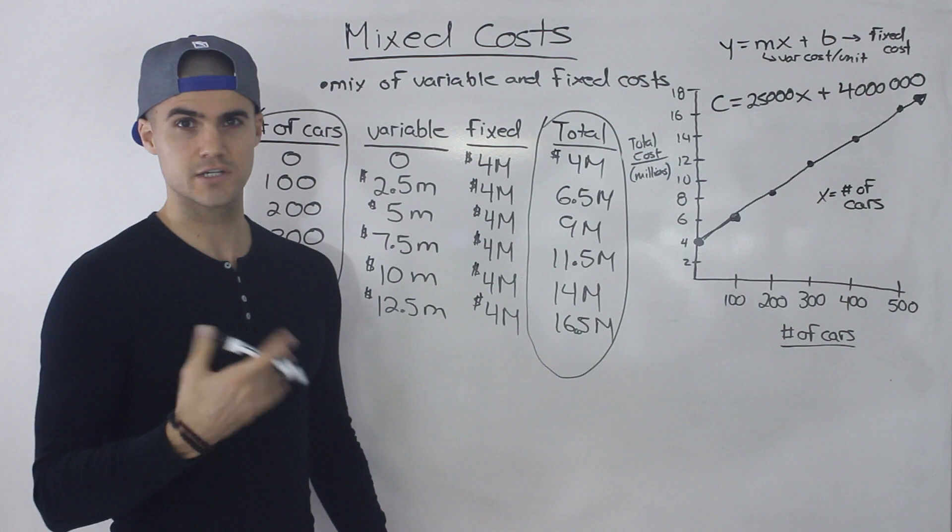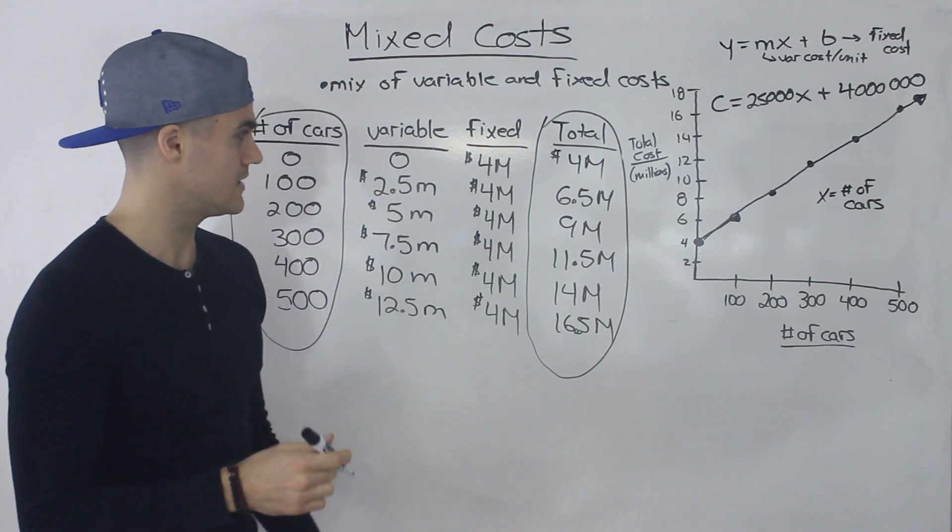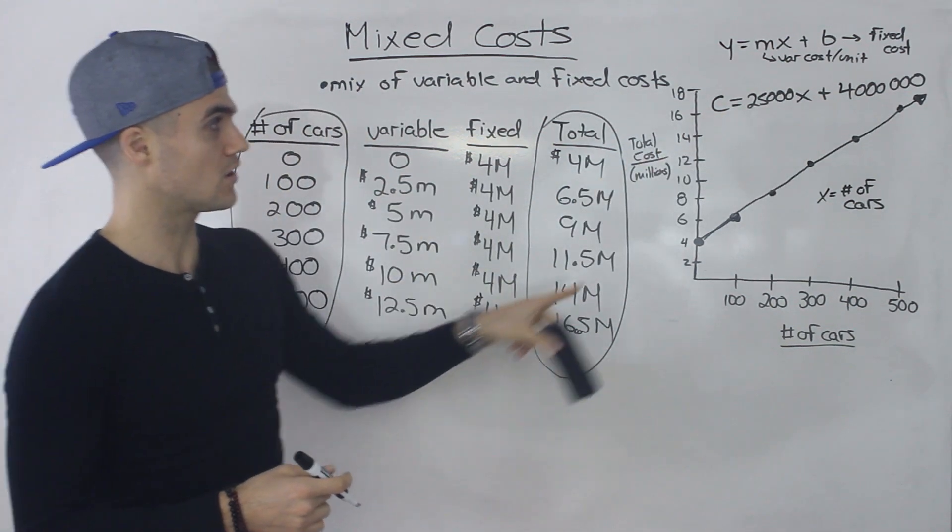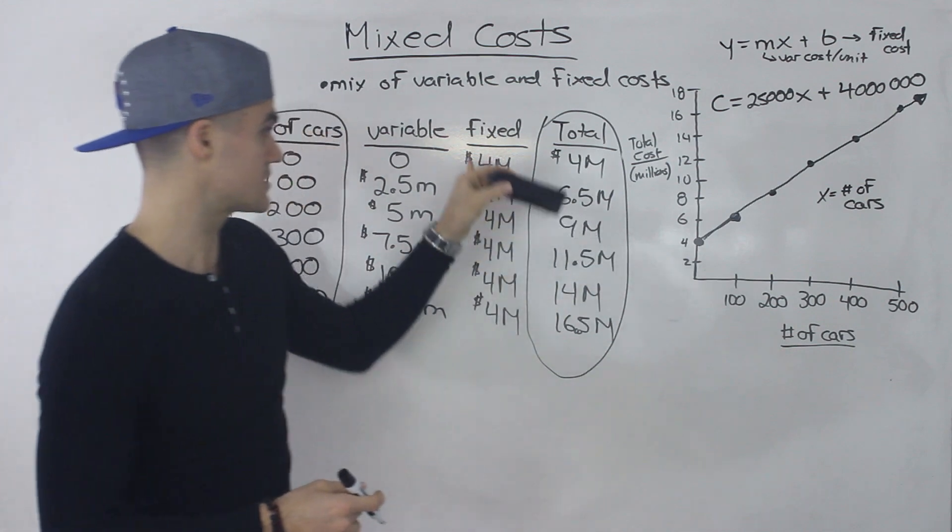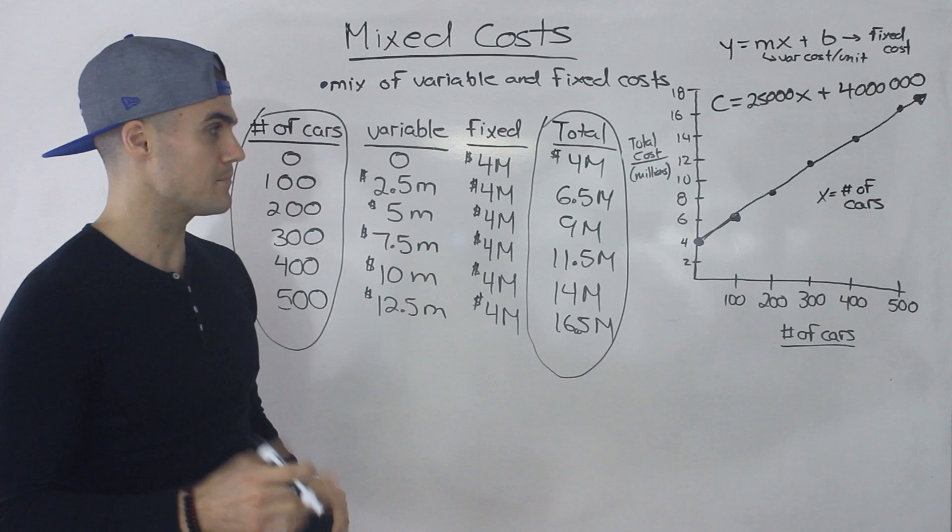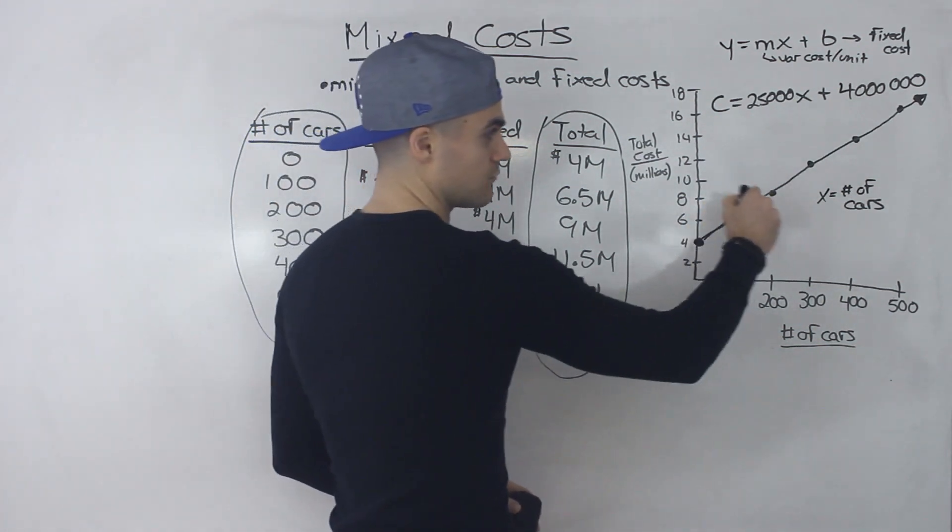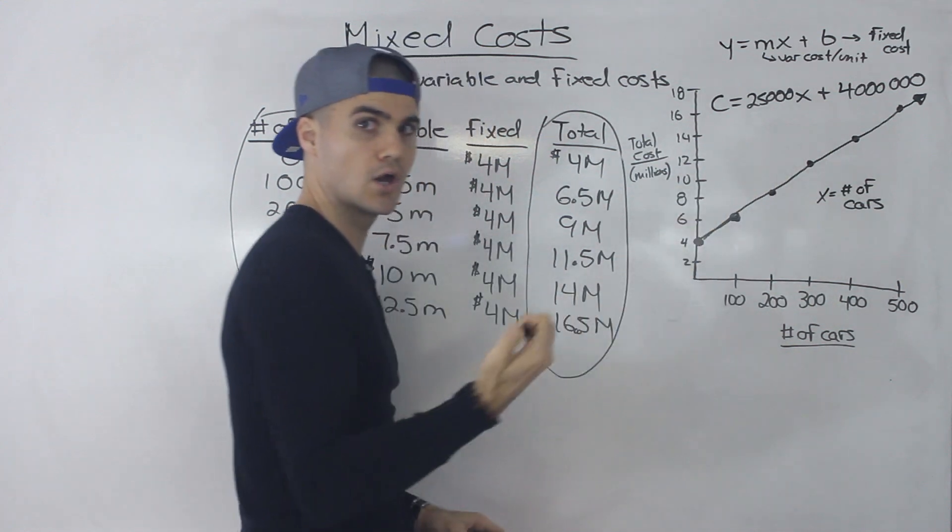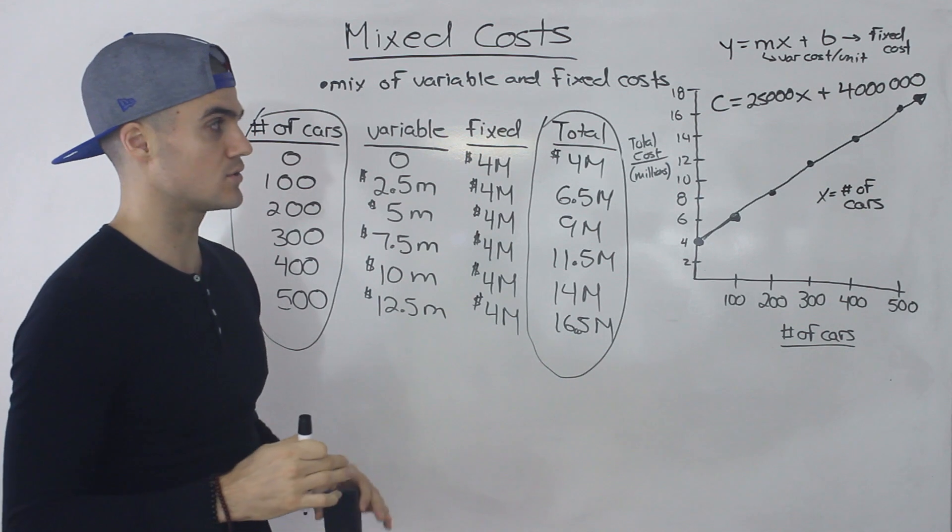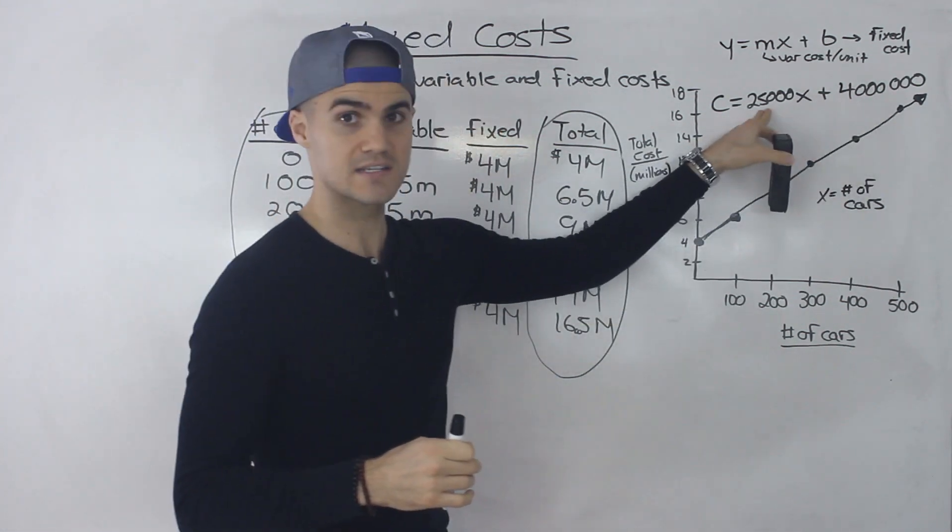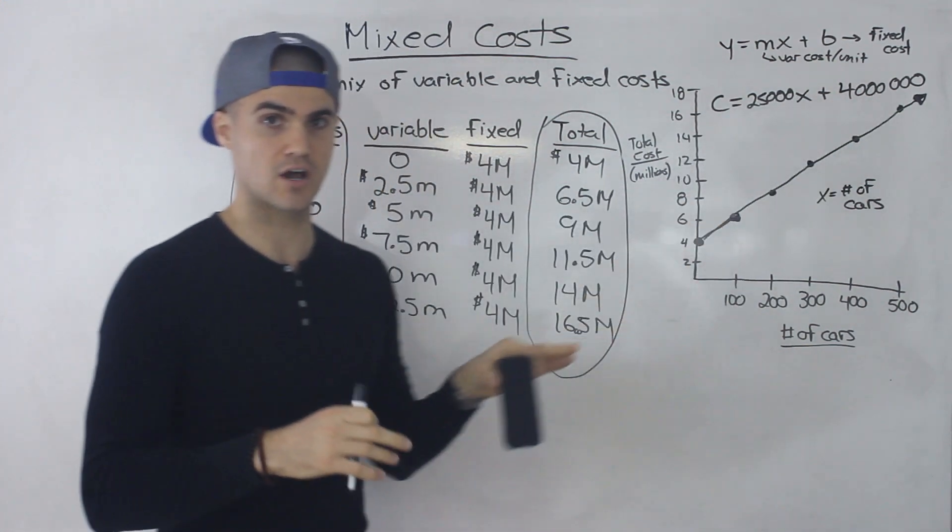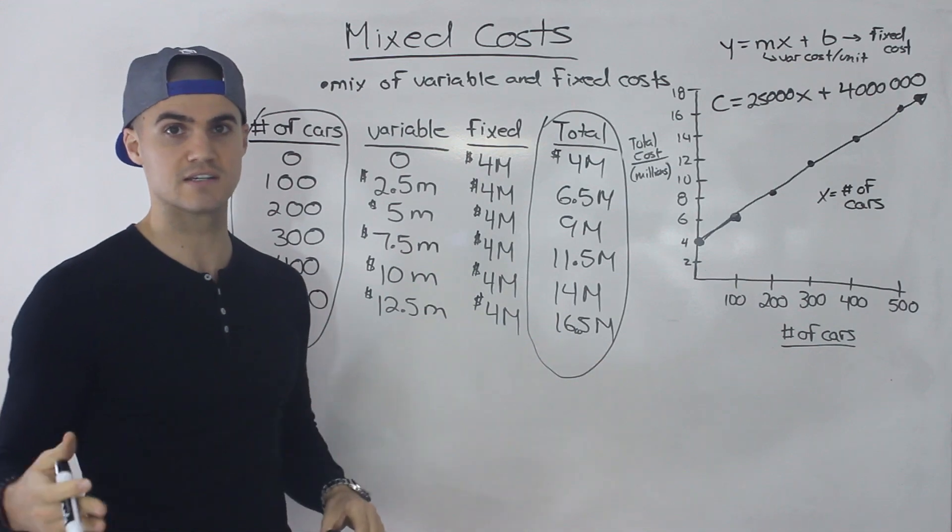Now this example that we just did, it's actually not too bad. It's pretty easy because we were given what that variable cost per unit is already. We were given it in the chart, and we were also given the fixed cost. But sometimes what's going to happen is you're just going to get a bunch of points in the middle. So you're not going to know what the variable cost is, and you're not going to know what the fixed cost is. And so you're going to have to actually derive this formula using different methods.